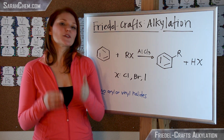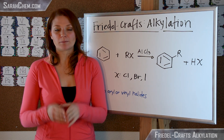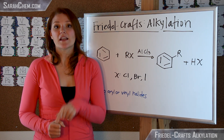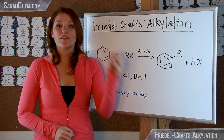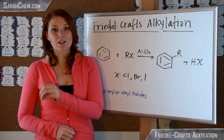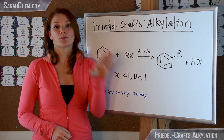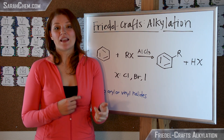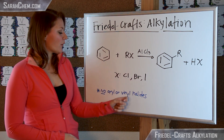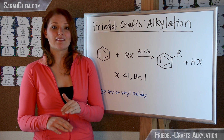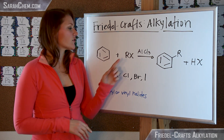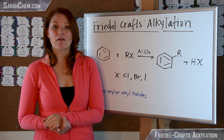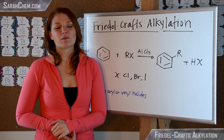There are a couple of important things to know about this reaction. First, you have to be careful of carbocation rearrangements. The electrophile made in the course of this reaction is a carbocation, which means it can rearrange to a more stable carbocation. Second, you cannot use aryl or vinyl halides as your starting reactant. You can, however, use primary alkyl halides, and we'll talk about that as we move through.